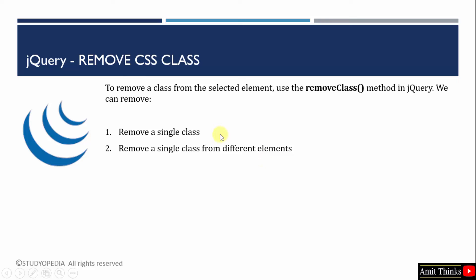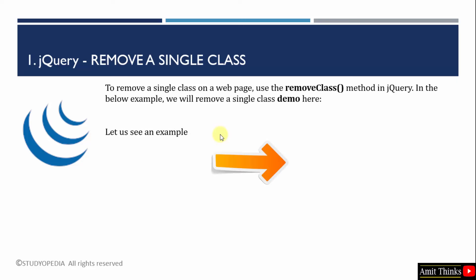We will first see how to remove a single class. To remove a single class, we will use the removeClass method. Let us see an example in which we will remove a single class called demo. We have a demo class wherein we have set the CSS style, and we will remove that class from the selected element.